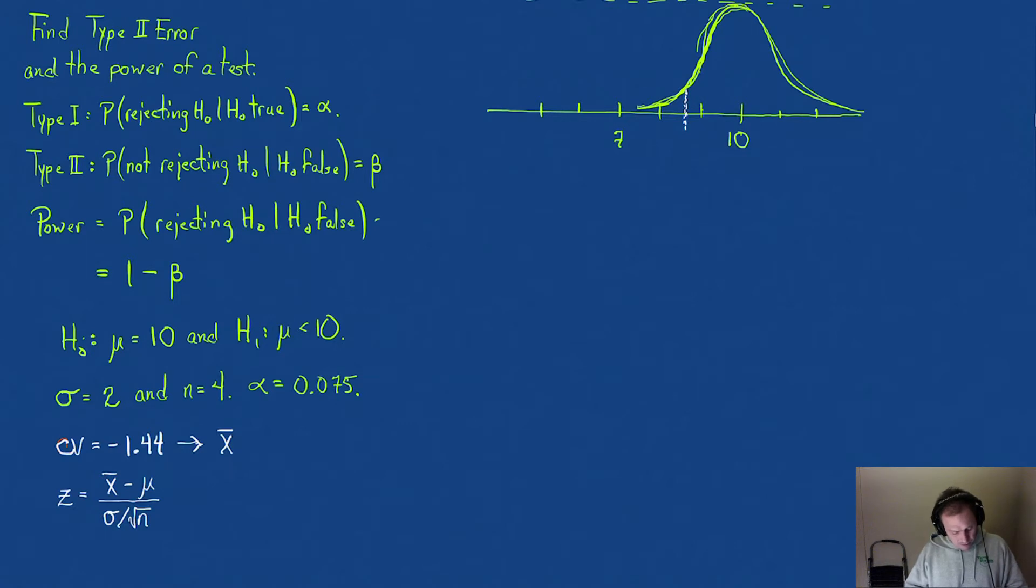In our problem, Z is negative 1.44, X̄ we're going to find, minus the mean which is 10, divided by 2 over the square root of 4. If I solve this with a little bit of algebra, X̄ equals 10 minus 1.44, which is 8.56.